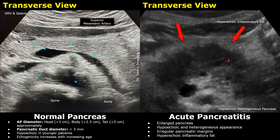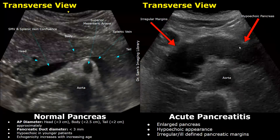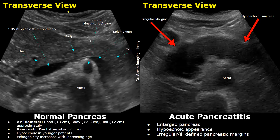This is another case of acute pancreatitis. You can see an enlarged pancreas with irregular margins. The gland is more hypoechoic. The pancreas has an anterior bowing, which is not present in a normal pancreas — this anterior bowing is another feature seen in acute pancreatitis.